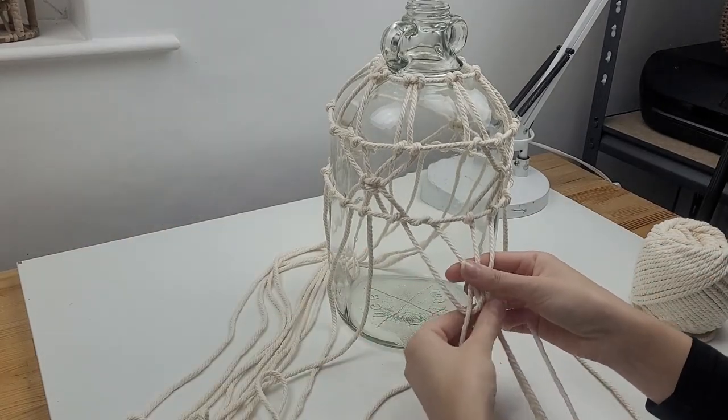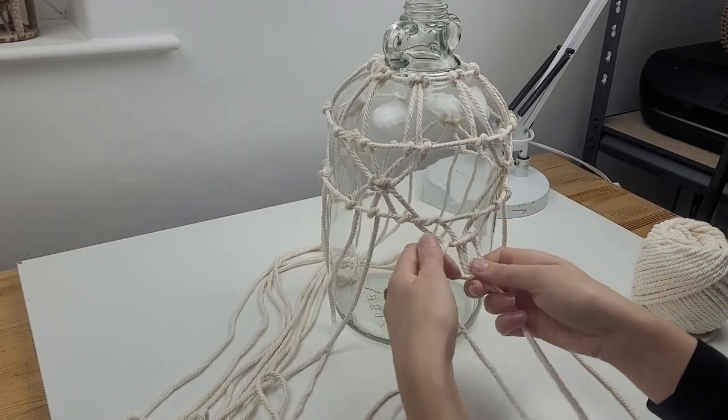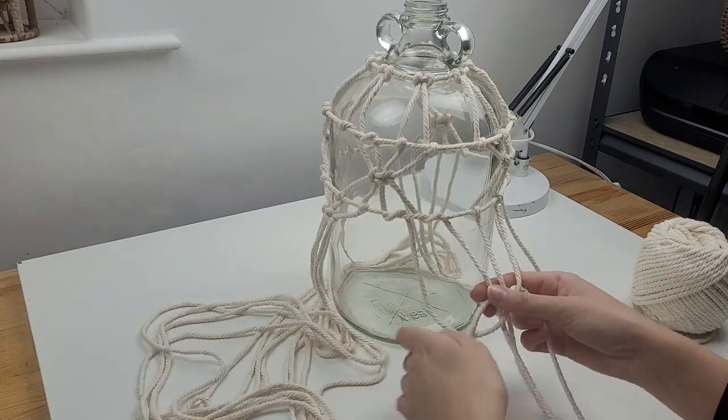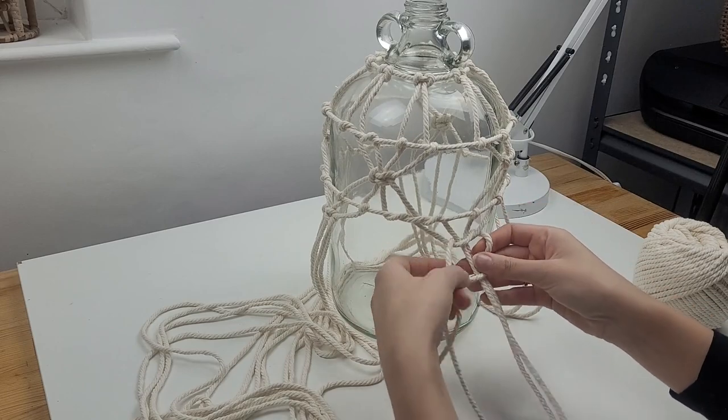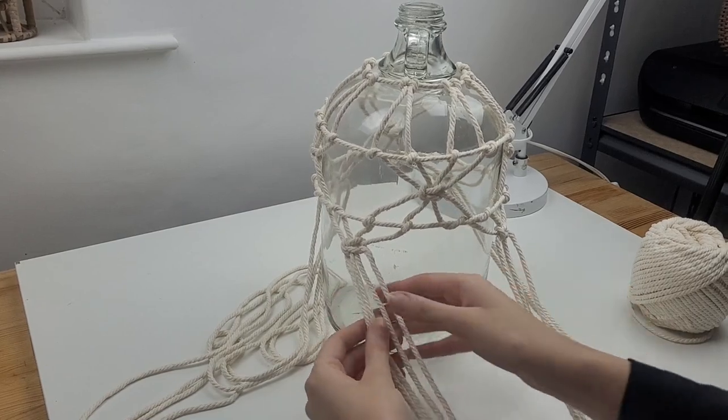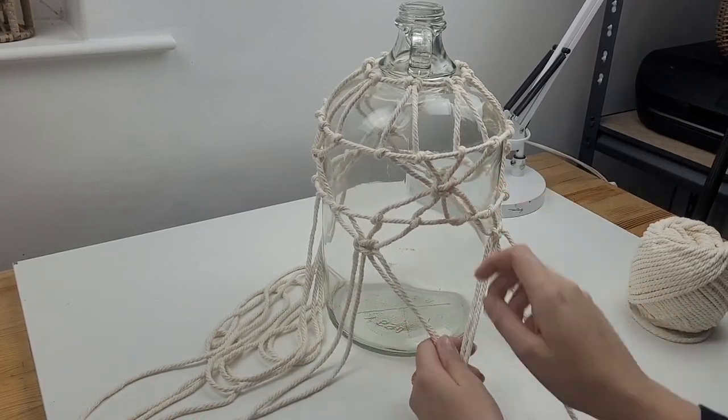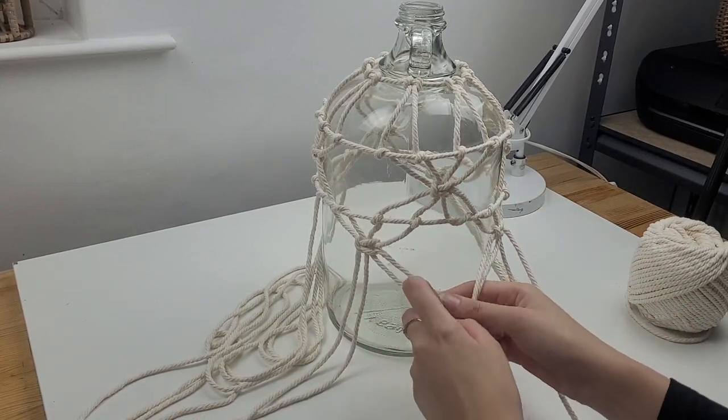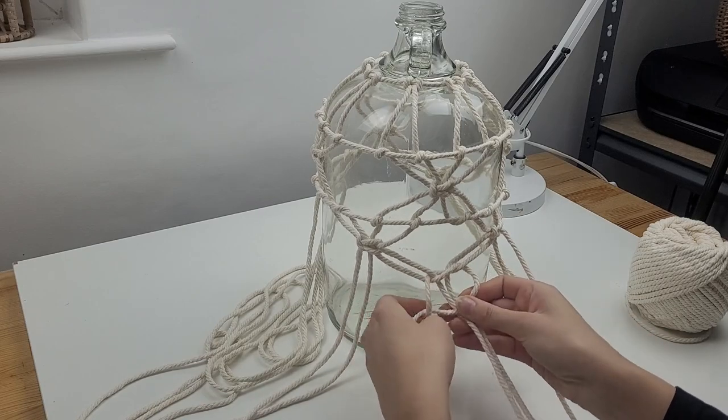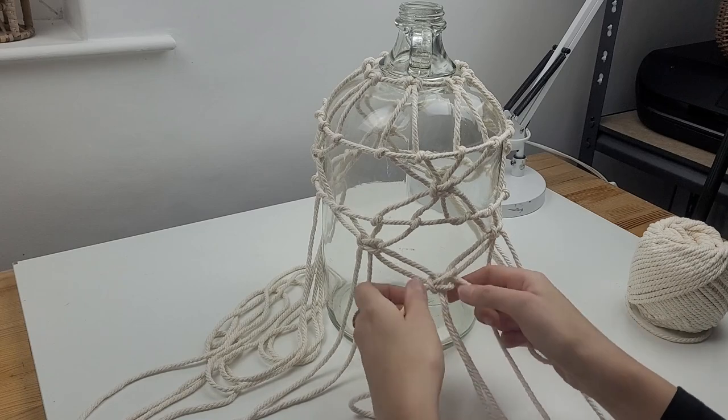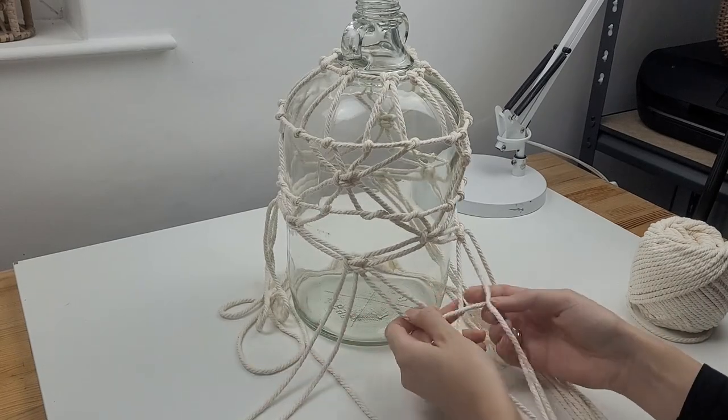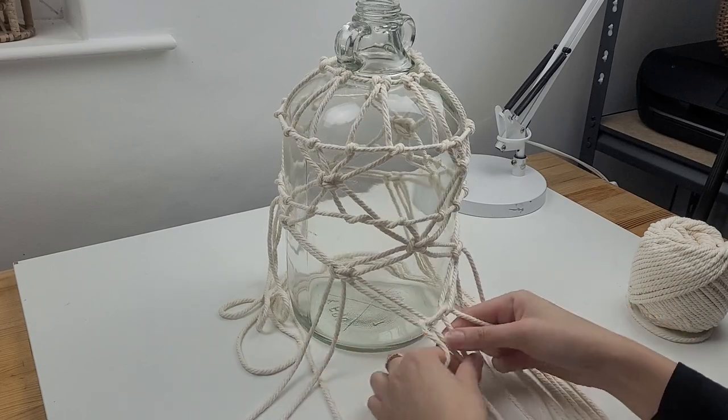Going level lower, I create another row of square knots. This time I make them between the ones which are higher. Going even lower, I take two cords from adjacent square knots and create another square knot which will be on the same line what first knot is. And then I create third row of square knots all around the jar.